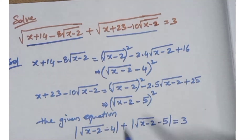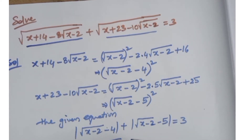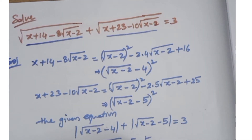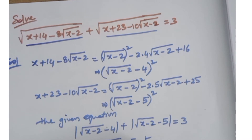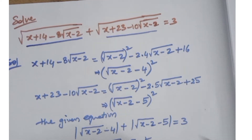Now let root of x minus 2 minus 5 equal to t. Then root of x minus 2 minus 4 equals t plus 1. So the equation becomes: modulus of t plus 1, plus modulus of t, is equal to 3.